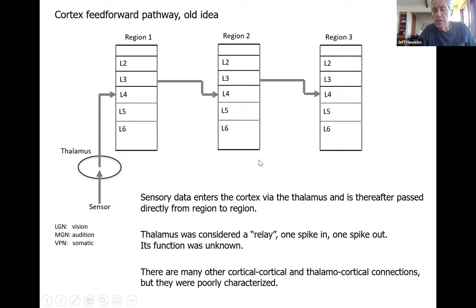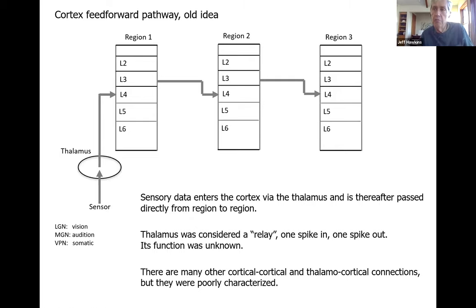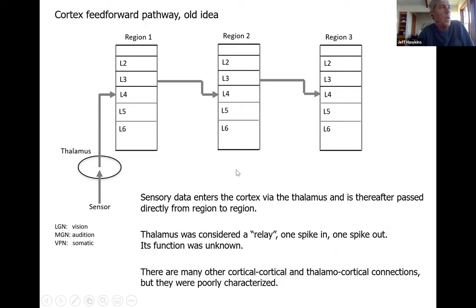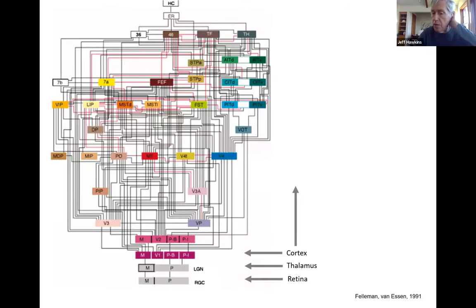Information was seen as passing directly from region to region. They called the thalamus a relay because one spike into the thalamus from a sensor could lead to one spike out. It was known that there were many other cortical-cortical connections and connections between the cortex and the thalamus, but no one knew what they were — they weren't well characterized. So people just said there are loops between the cortex and thalamus, but they were generally ignored. You can see this in the famous Felleman and Van Essen diagram from 1991, which became the standard of how we think about cortical flow.